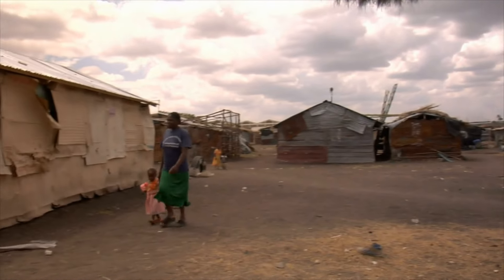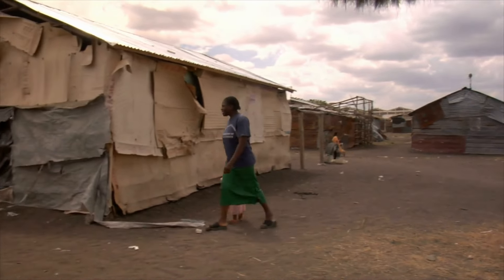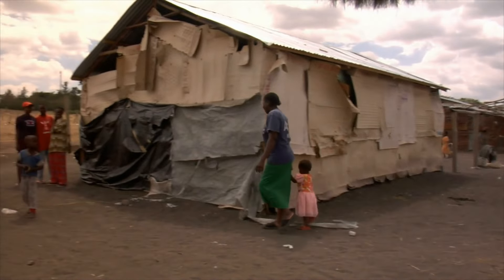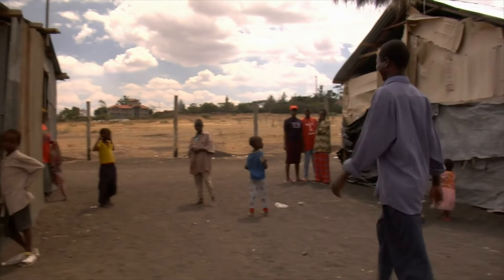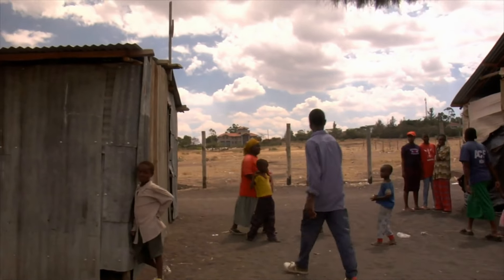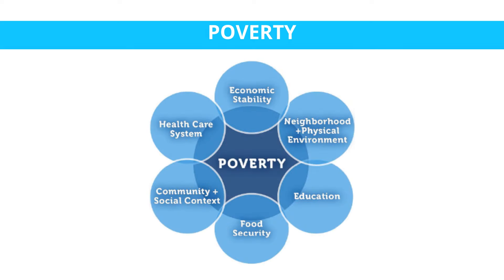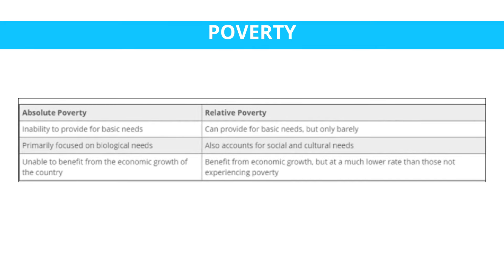Poverty is a multifaceted and complex phenomenon characterized by the lack of sufficient material, social, and economic resources necessary to meet basic human needs and participate fully in society. It goes beyond the absence of income and extends to the deprivation of essential goods and services such as food, clean water, shelter, education, health care, and social support systems. Poverty can manifest in various forms, including absolute poverty — a lack of basic necessities — and relative poverty, falling below the average living standards in a particular society.